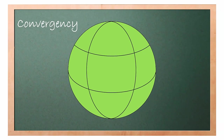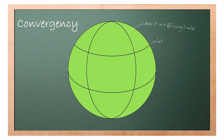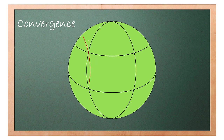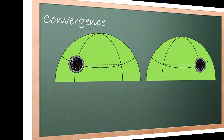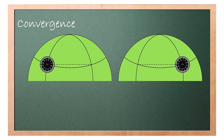The fourth concept we need to understand is convergency. This is a sphere representing the Earth; this line represents latitude and this line represents meridian, also known as longitude. If we bring this meridian from here to here, it will create an angle. The angle created here is known as convergency.